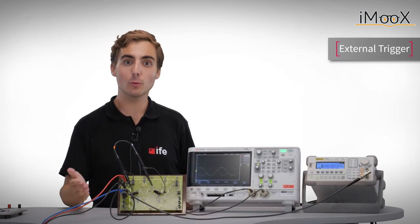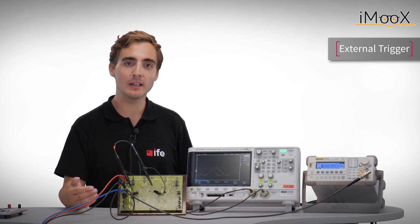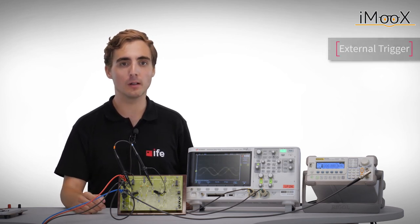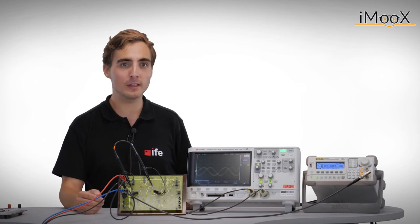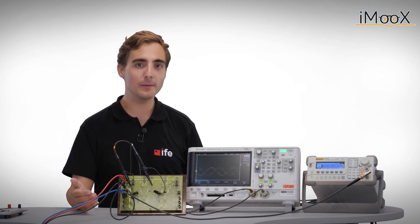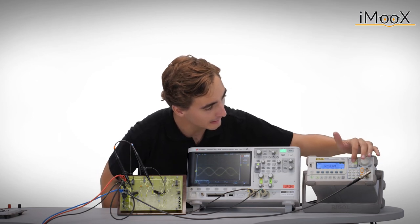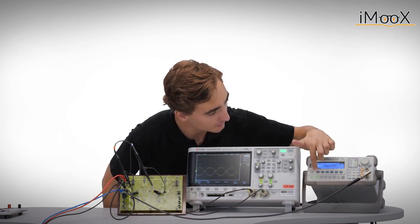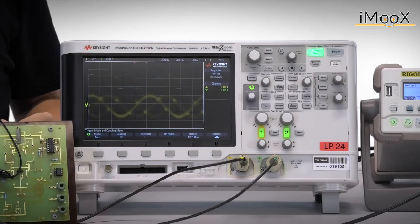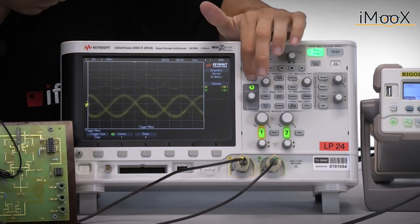Another possibility would be to use an external trigger, where an additional trigger signal is created and passed on to the scope. Both our signal generator and the scope offer an external trigger port on the back side. On the signal generator, it is called Sync Out and it has to be enabled in the Utility menu. On the scope, it is called External Trigger In and, of course, the trigger has to be set to External.